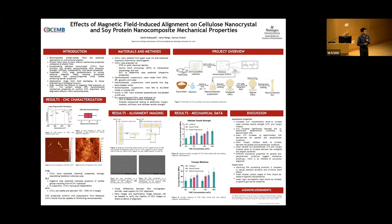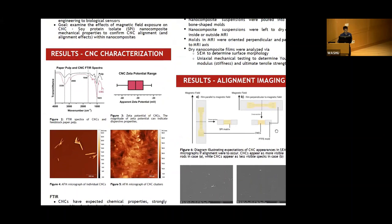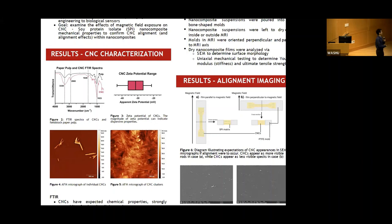The first step was isolating cellulose nanocrystals by treating paper pulp with hot sulfuric acid, which hydrolyzes the amorphous regions of cellulose. We verified the product: the infrared spectrum of our cellulose nanocrystals closely matches the feedstock pulp, confirming it is indeed cellulose and will have the negative diamagnetic anisotropy needed to align in a magnetic field.